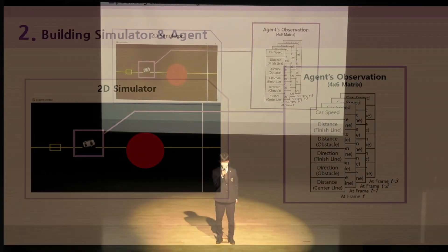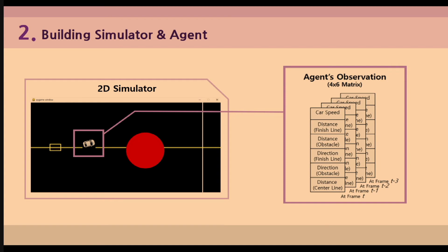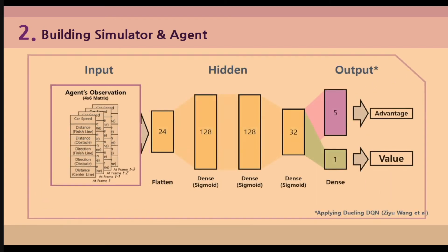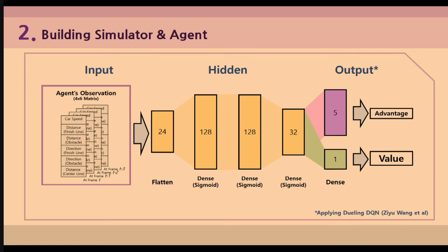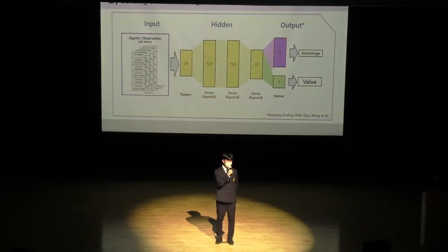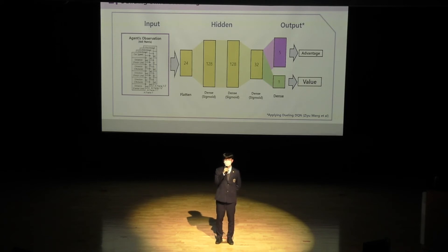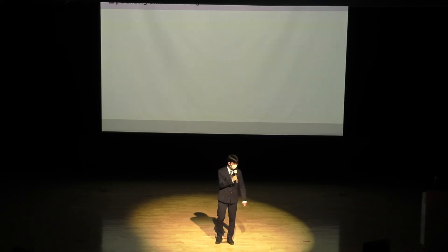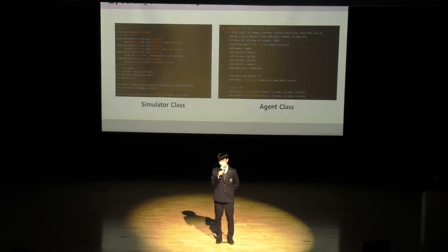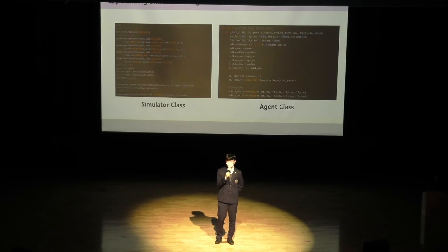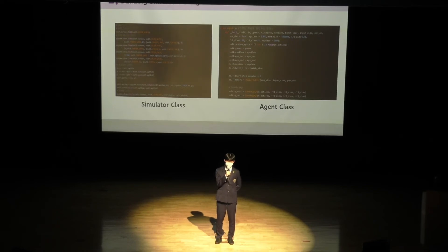To implement the agent's policy, I constructed a Deep Q-Network model. The agent's observation data goes through the input layer of the network, and the output layer produces quality values by which the agent infers the optimal action. These two pictures show part of my source code — the simulator class and the agent class respectively.